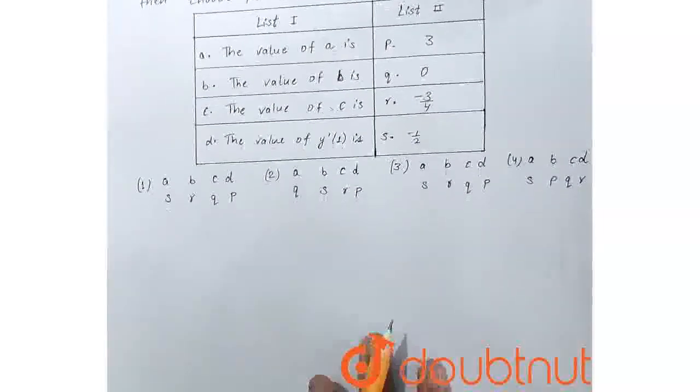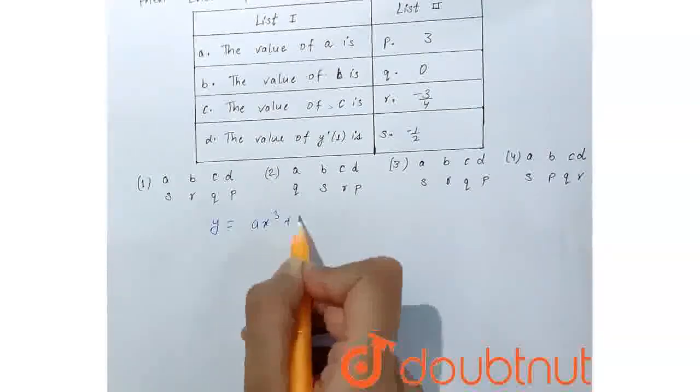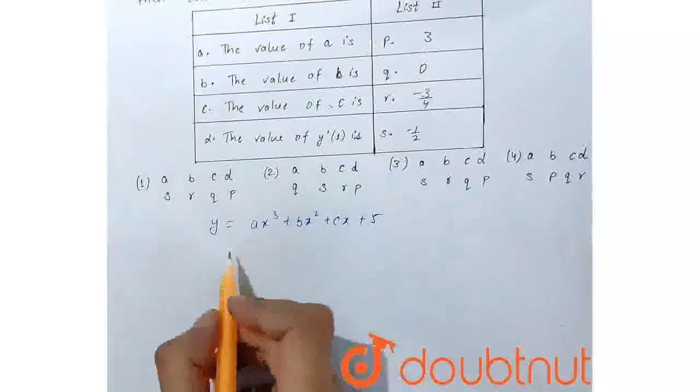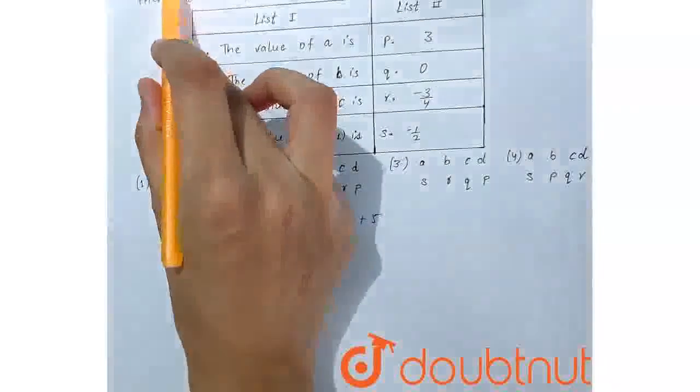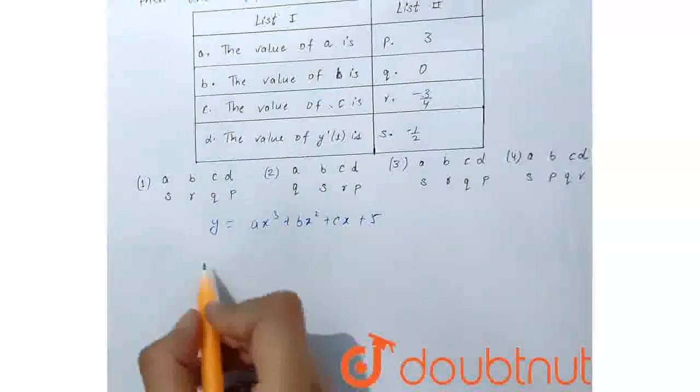So now, solve the equation as it's given curve ax³ plus bx² plus cx plus 5. Put the value, so this point p will satisfy the given equation as it lies on the curve.